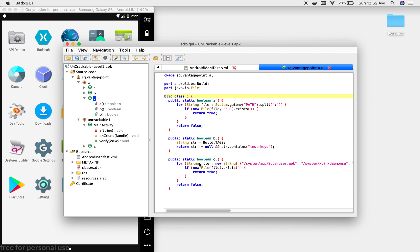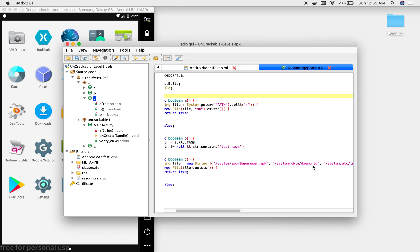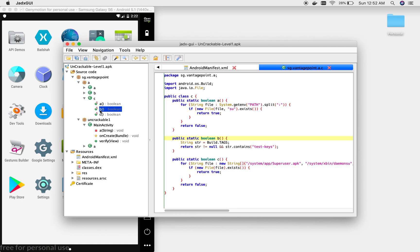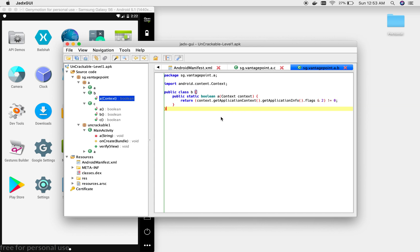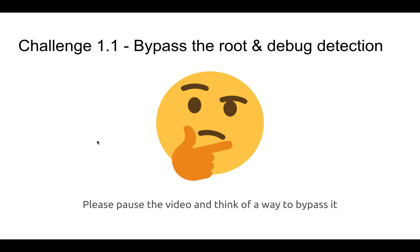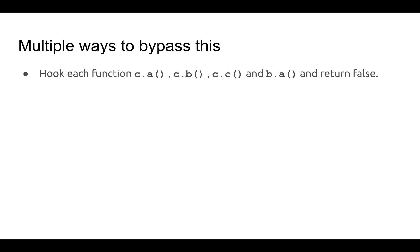c.a checks for the su binary, c.b checks build tags for the presence of 'test-keys', and c.c performs additional checks. There are multiple ways to bypass this. The first would be to hook each function — c.a, c.b, c.c, and b.a — and return false everywhere, so whenever those functions are called they always return false.